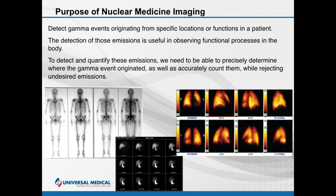To detect these emissions we need a specialized piece of equipment. We need to be able to look at where the events originated from, accurately count them, and eliminate or reject any undesired emissions. Some of the images shown here include a total body scan, a renal flow, and lung scans — these represent the kind of image quality you can expect out of a gamma camera.